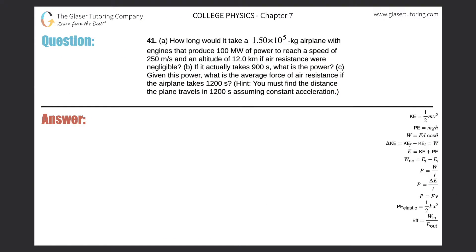Number 41, letter A. How long would it take a 1.5×10⁵ kilogram airplane with engines that produce 100 megawatts of power to reach a speed of 250 meters per second and an altitude of 12 kilometers if air resistance were negligible?